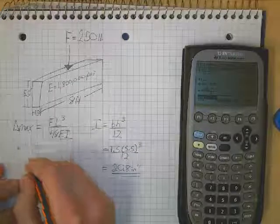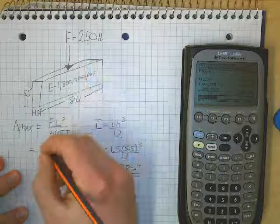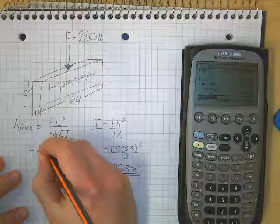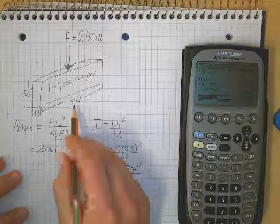20.8, and my units for that is inches to the fourth. Okay? So now I can use that in my next equation. So my delta max, I'll just plug in, and so I have 250 pounds being applied for my force, so 250 times my length cubed, and now 8 feet.